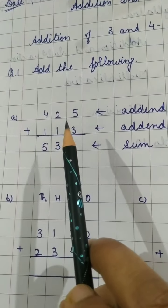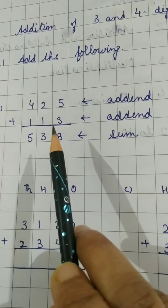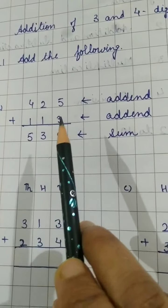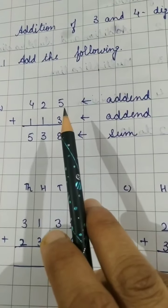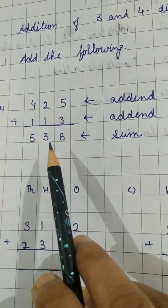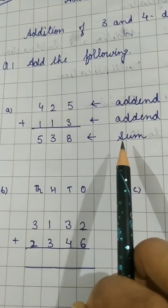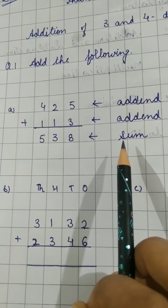First of all, the quantities which we add are called addends. Like this also addend and this one also is addend. After adding the answer which we get is called the sum. So you all have to write this addend and sum in your notebook too.